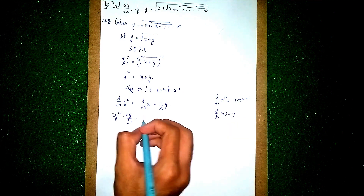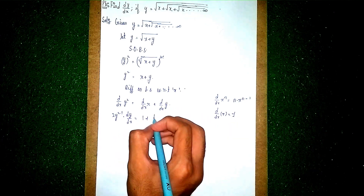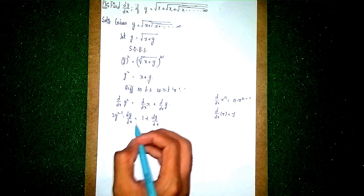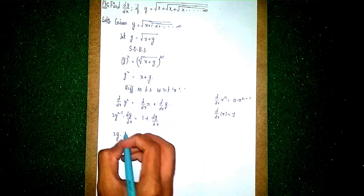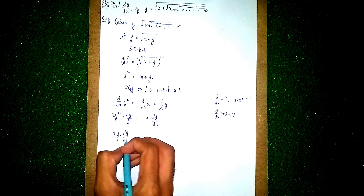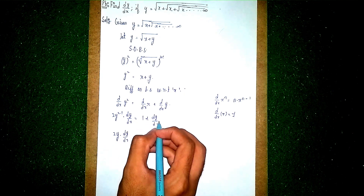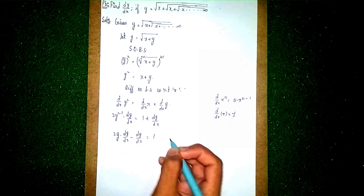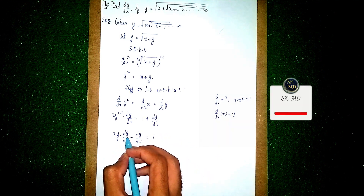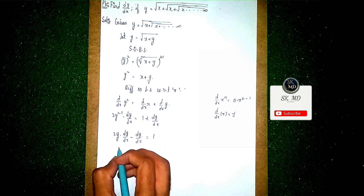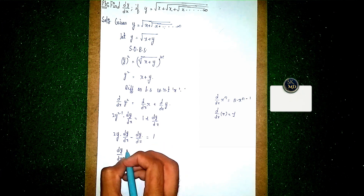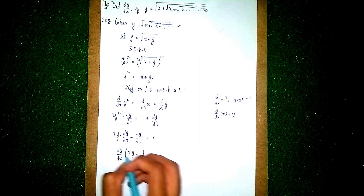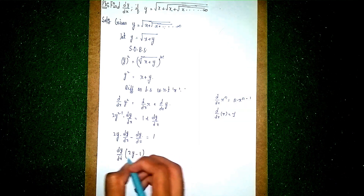Applying the chain rule, we get 2y times dy/dx on the left side. On the right side, d/dx of x gives 1, and d/dx of y gives dy/dx. So the equation becomes 2y times dy/dx equals 1 plus dy/dx.